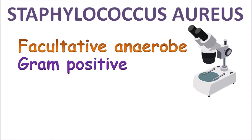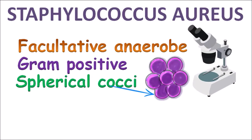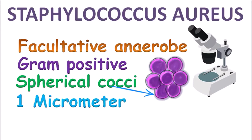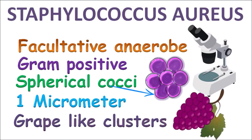It is a gram positive bacteria, which means it takes up gram stain. It is a spherical cocci and measures one micrometer in diameter. It is arranged in grape-like clusters because Staphylococcus divides in all four planes, due to which it is arranged in clusters.